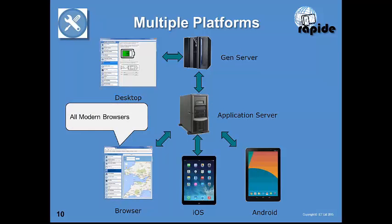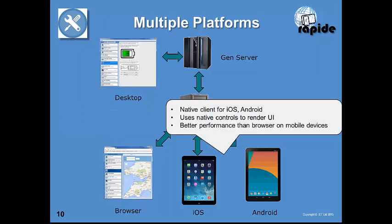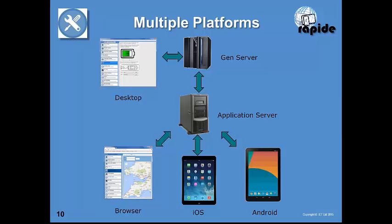For the browser, any modern browser supporting JavaScript is supported, including mobile browsers like Safari and Chrome on mobile devices, as well as Chrome, Firefox, and Internet Explorer on desktop. For iOS and Android, RAPID uses a native client — not a browser application on the device, but a native client using native controls to render the user interface. This means the look and feel matches what users expect on that device, and it offers much better performance than a browser application on mobile.